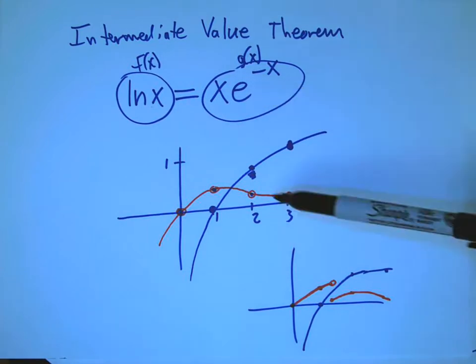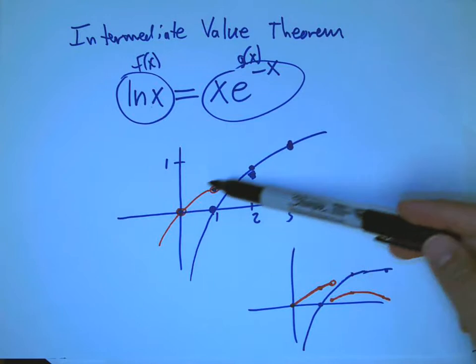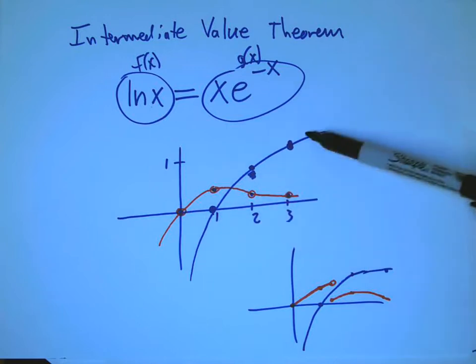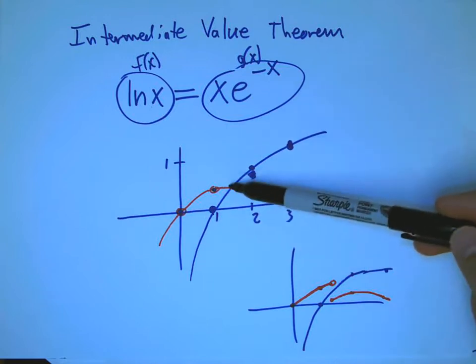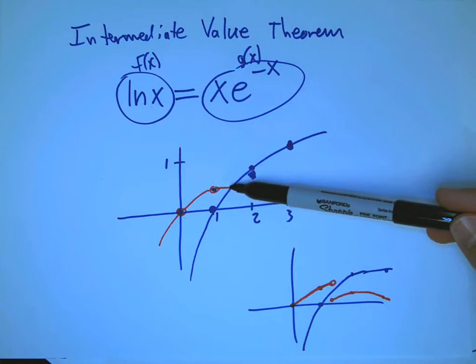ln x equals x e to the minus x. If you graph it on the calculator, the calculator gives you a lot of points and it makes it fairly clear that it looks like there's some magic number where these cross. But I pointed out that you're really assuming something there, that there's not some little gap where they just hop across each other.